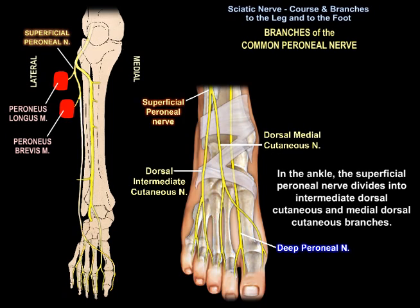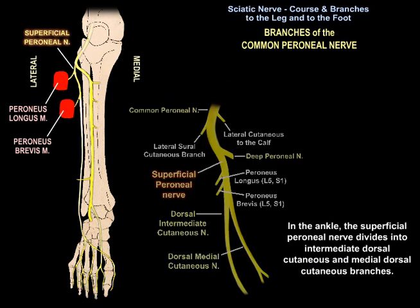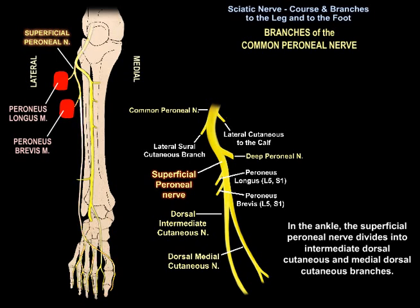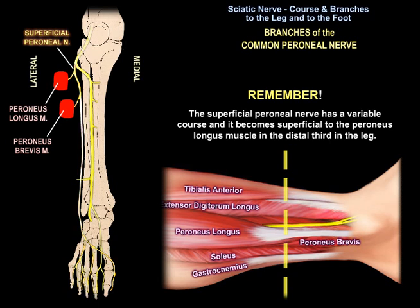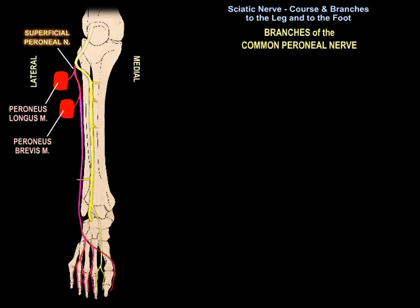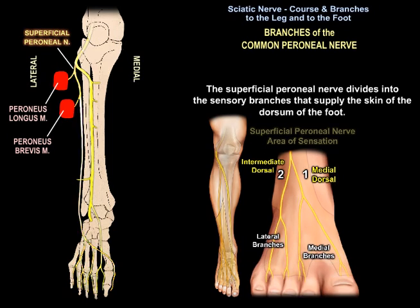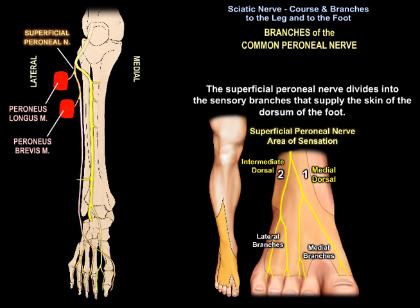In the ankle, the superficial perineal nerve divides into intermediate dorsal cutaneous and medial dorsal cutaneous branches. Just remember, the superficial perineal nerve has variable courses and becomes superficial to the perineus longus muscle in the distal third of the leg, as you can see in this picture. The superficial perineal nerve divides into sensory branches that supply the skin of the dorsum of the foot.